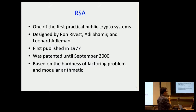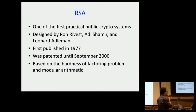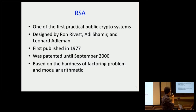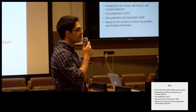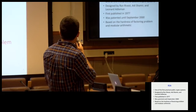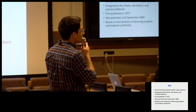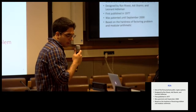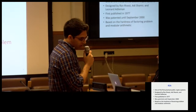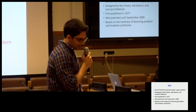RSA, invented by Rivest, Shamir, and Adleman, is the first practical public key encryption system that we have. It was published in 1977 — almost 40 years ago — and was patented until 2001. That's why El Gamal and the Digital Signature Algorithm (DSA) based on El Gamal were used in many protocols, because RSA was patented until 2001. RSA is based on the hardness of the factoring problem and modular arithmetic.